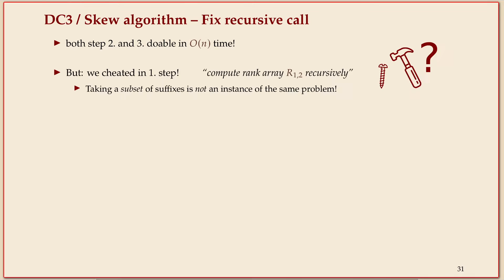Unfortunately in step one where we said we just recurse on all those suffixes that start at a position that's not a multiple of three, we kind of cheated. The problem we're solving is here's a string, sort its suffixes all of them, and now I'm telling you use this algorithm recursively for sorting a subset of those suffixes. That's not the same question, it's not giving you one string for which you sort all its suffixes.